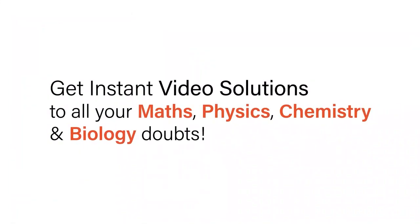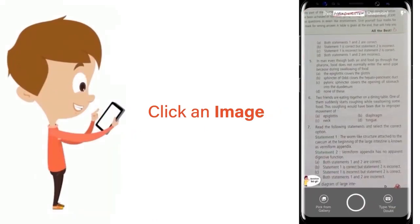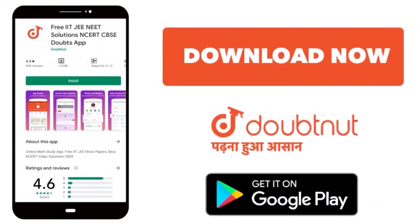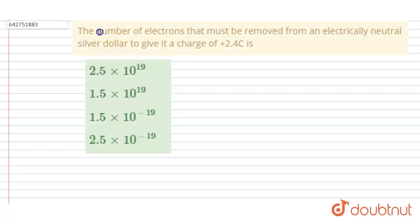With Doubtnet, get instant video solutions to all your maths, physics, chemistry, and biology doubts. Just click the image of the question, crop the question, and get instant video solution. Download Doubtnet app today. Hello everyone. The number of electrons that must be removed from an electrically neutral silver donor to give a charge of plus 2.4 coulomb.